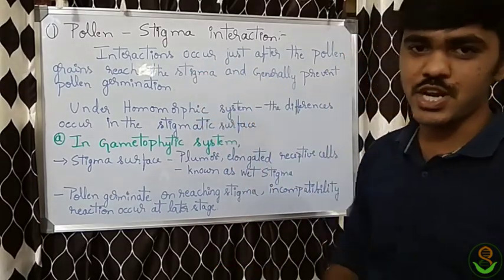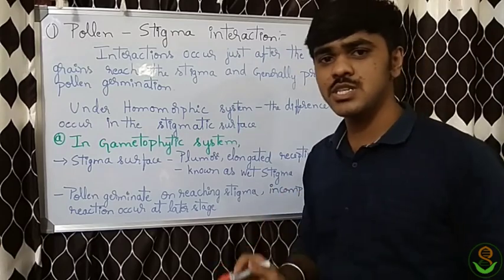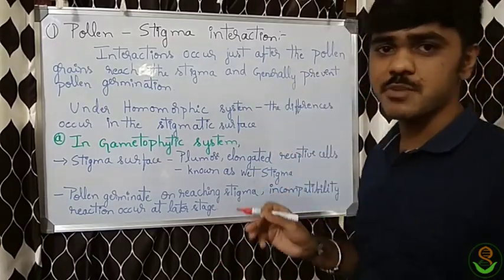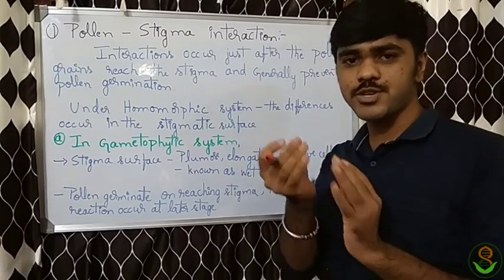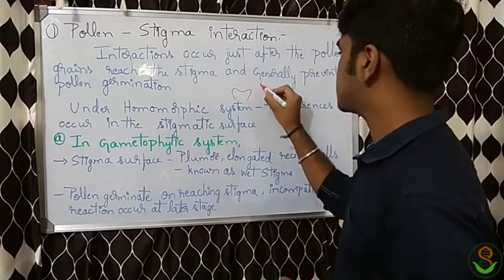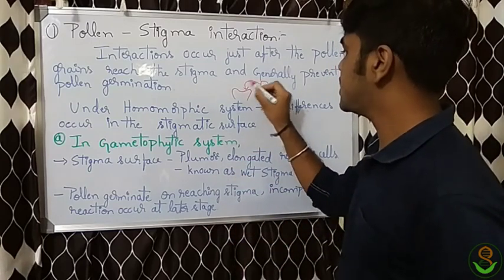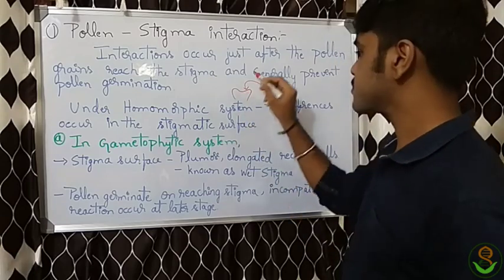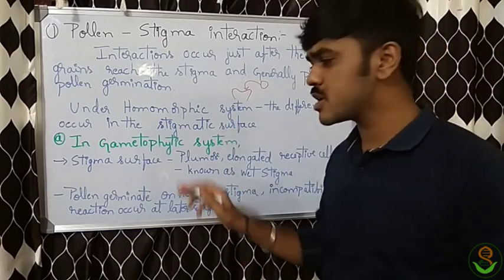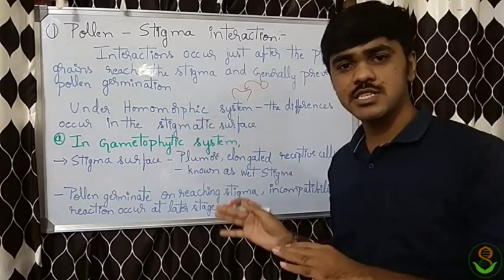Let's begin with the first topic: pollen-stigma interactions. Interactions occur just after the pollen grains reach the stigmatic surface and generally prevent pollen germination — that is, they prevent the pollen tube growth. The reaction begins when pollen reaches the stigmatic surface and usually doesn't allow pollen tube germination. This is very common in the homomorphic system.